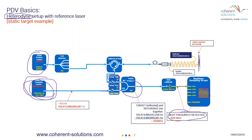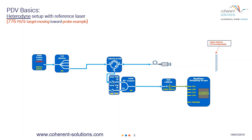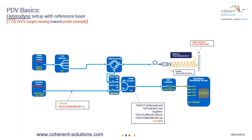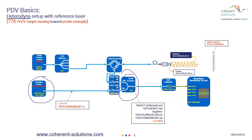Let's look at that same heterodyne example, except now the target is actually moving. We start with a reference laser offset by 0.004 nanometers above 1,550 — approximately 500 megahertz difference in optical frequency. The target will be moving towards the probe at 776 meters per second, introducing a total Doppler shift of 1 gigahertz. This 1 gigahertz Doppler-shifted target laser goes back to the coupler and mixes with the reference. Since the reference started with a 500 megahertz difference and there's a 1 gigahertz Doppler shift, the total beat frequency is 1.5 gigahertz.